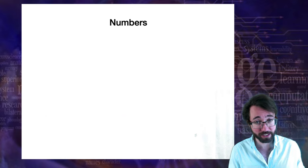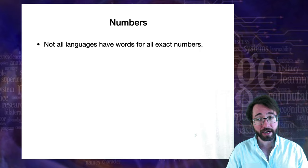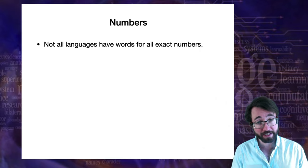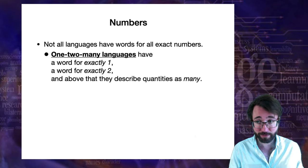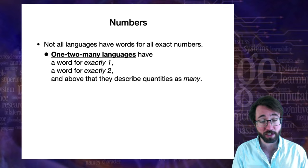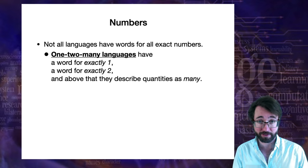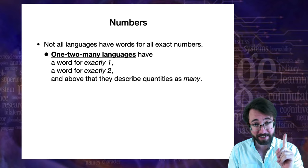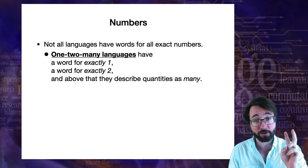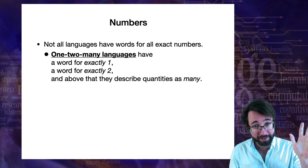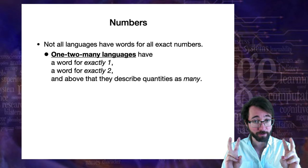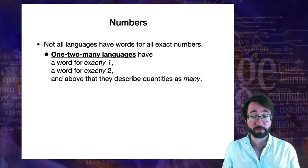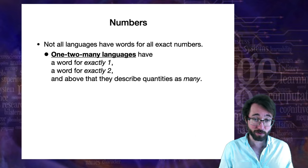Words for numbers is an aspect of the lexicon of a language. Not all languages have words for all exact numbers, as we do in English and in other languages spoken by industrialized cultures. Many languages are what linguists call one-too-many languages. These languages have a word meaning exactly one, a word meaning exactly two, and above that you don't have precise words — above two you describe it as many, or with vague words like few or several, expressing a quantity greater than two but not a precise quantity.